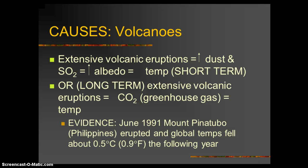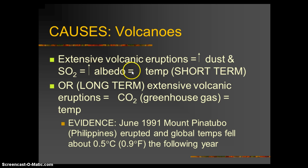Extensive volcanic eruption increases the amount of dust and sulfur dioxide that goes up into the atmosphere. That dust and sulfur dioxide blocks the sun's energy from hitting the surface of our planet. So if there's an increase in albedo, it's bouncing back out into space. Extensive volcanic eruption in the short term is going to increase the albedo and thereby decrease the temperature, preventing sun energy from hitting the planet — essentially blocking out the sun.